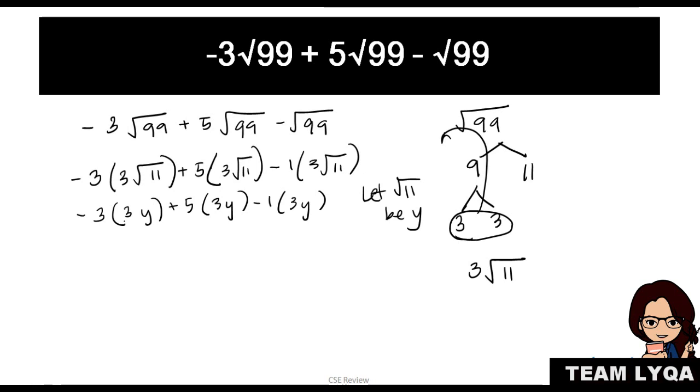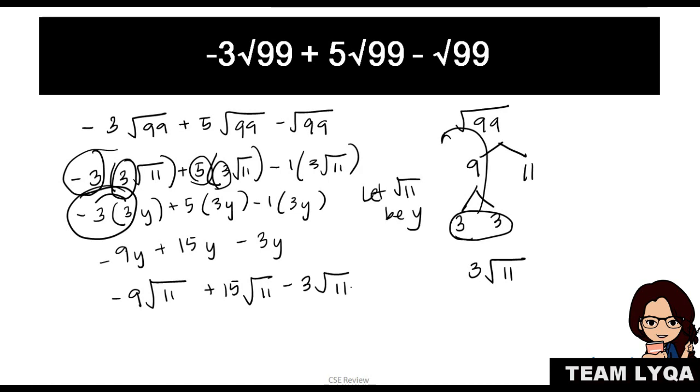What do we do with polynomials, with monomials like this? Negative 3 times 3, right? We multiply the common term then copy what's here. So this would be negative 9y plus 15y minus 3y. That means if this is what we do with polynomials, we do the same with radicals. So it becomes negative 9, because you combine negative 3 times 3, then copy the last name which is 11, plus 15 square root of 11, because 5 times 3, minus 3 square root of 11. And the next thing you're going to do is just look at their first names. So negative 9 plus 15 is going to be plus 6, minus 3 is equal to 3 square root of 11. That's your answer.